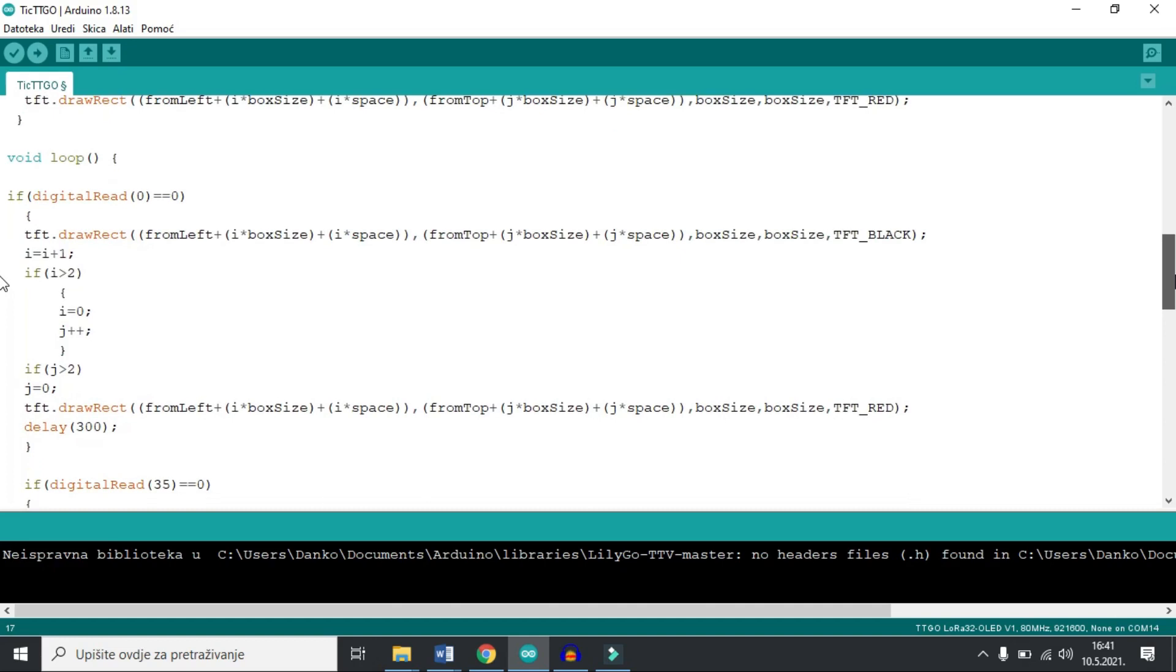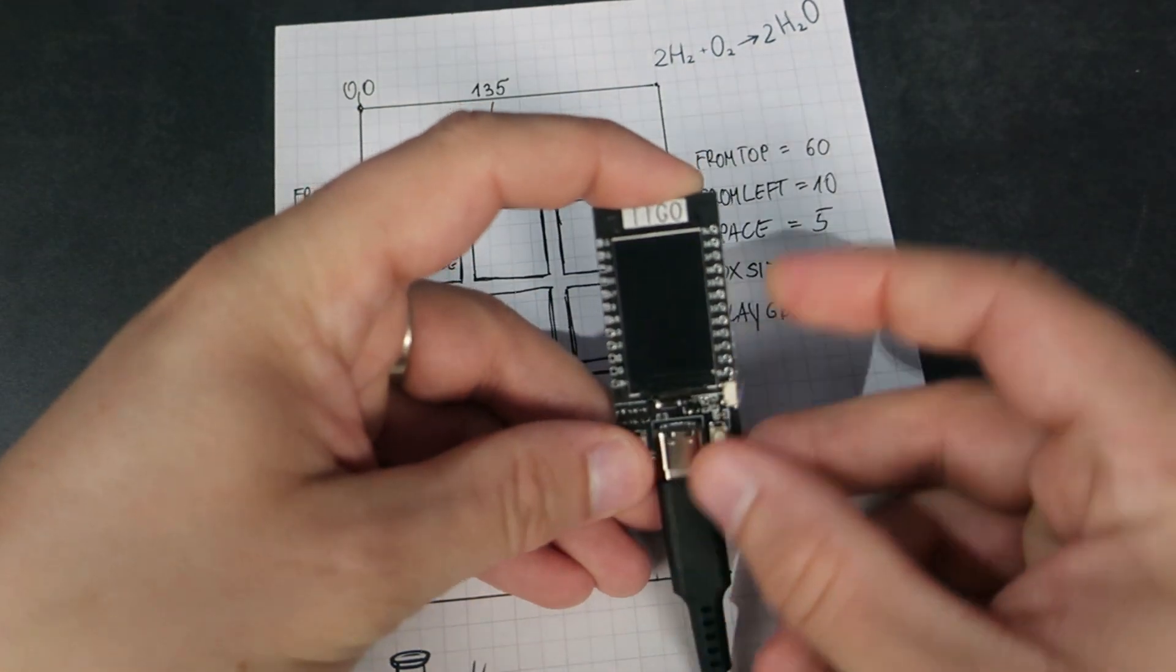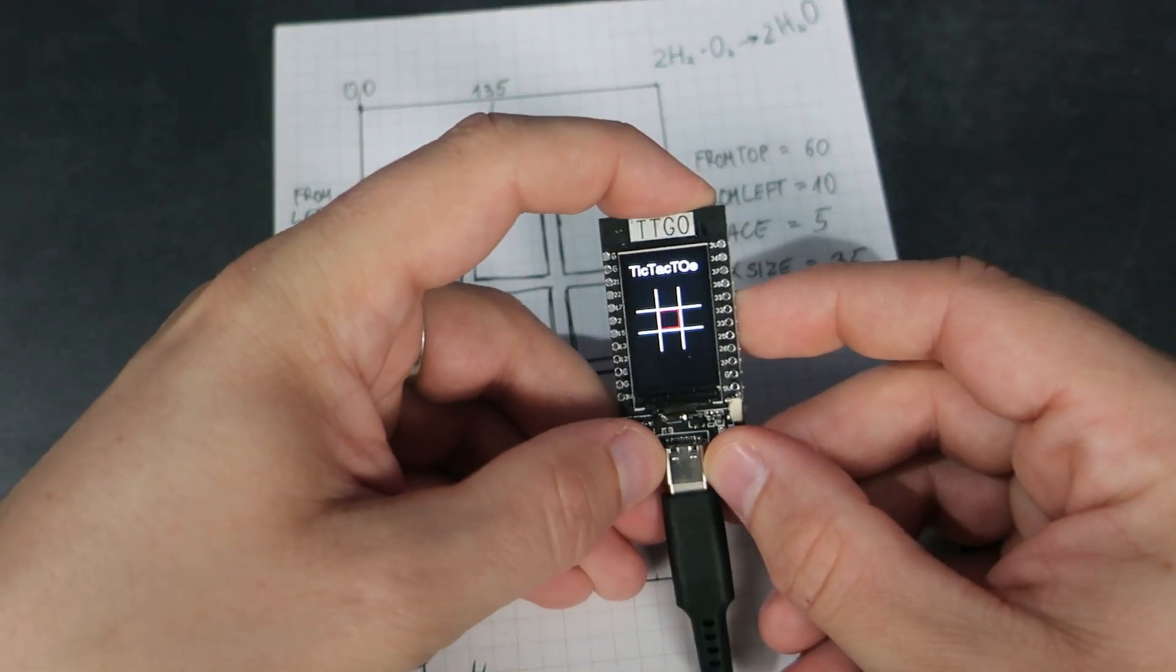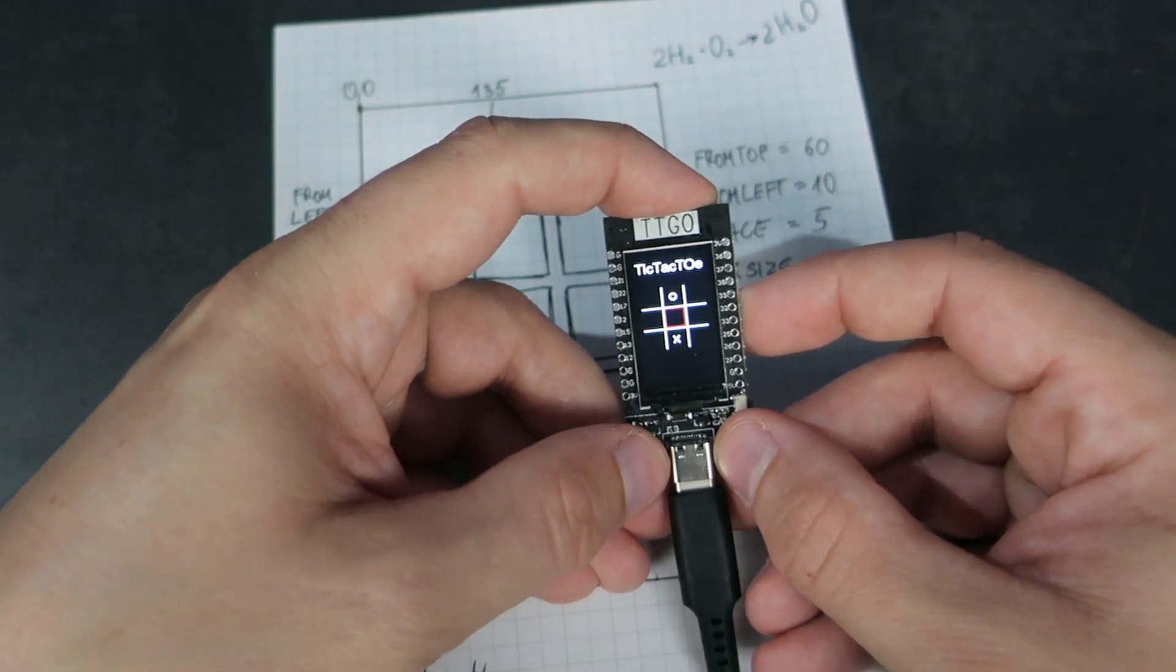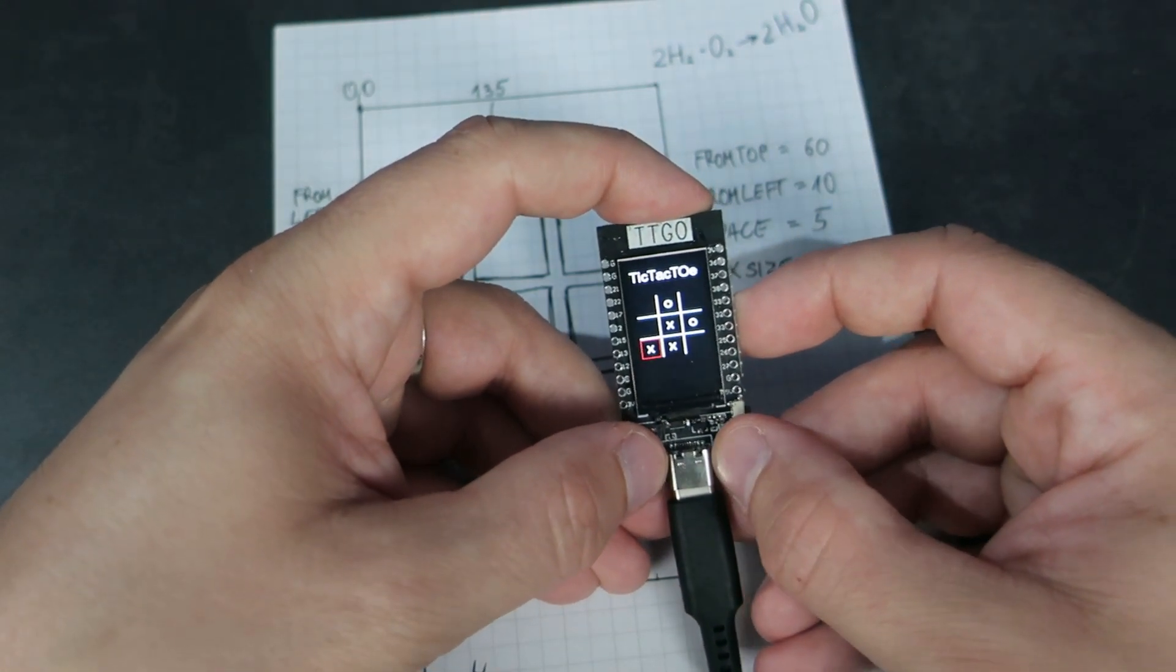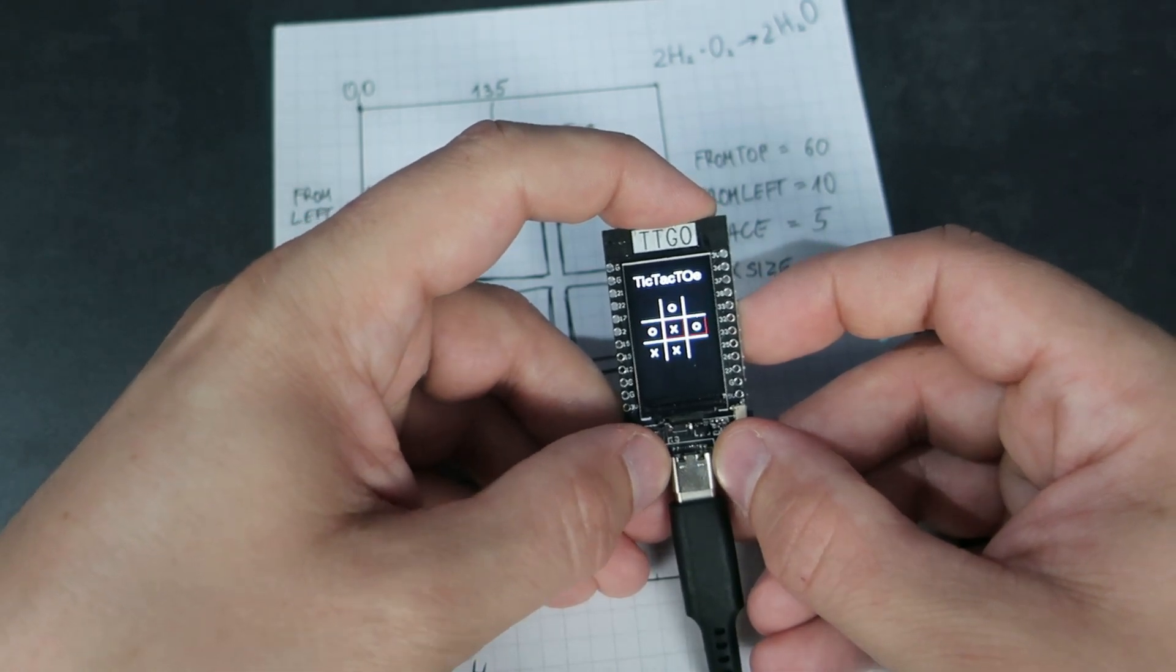Next part of the code is the loop function. In the loop I define what will happen if the player presses the left button or right button. With the left button, the player can choose a box, and with the right button, it will place X or O in the box. Here are also some drawing functions.